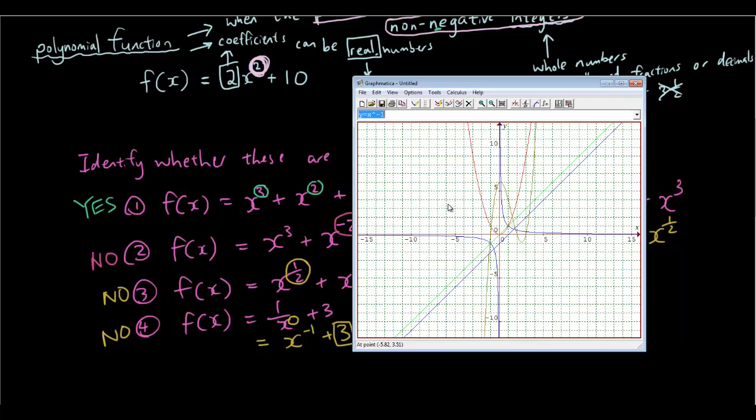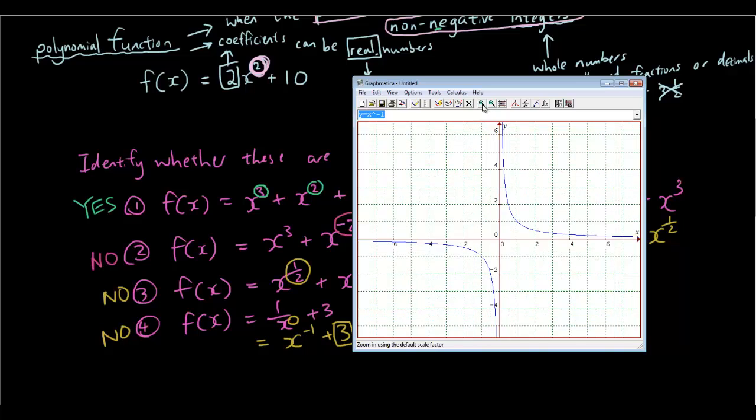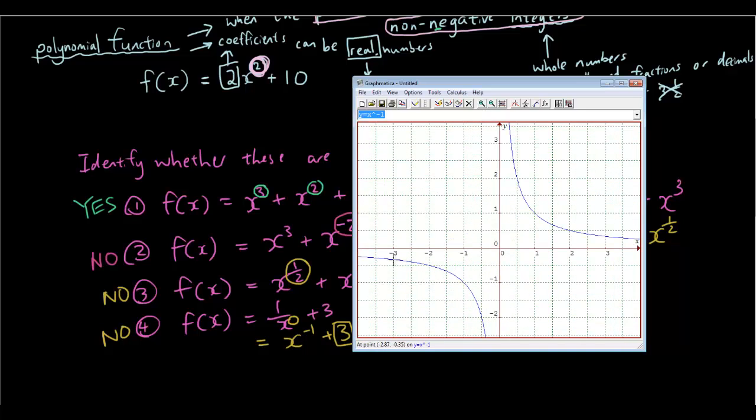Now, actually I'll just clear that for you so you can see it better. So, have a look at the equation here. This is now a discontinuous function, which means the lines are not joined at x is equal to zero. So, there is a break in the line.